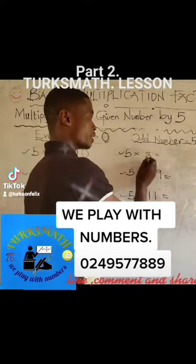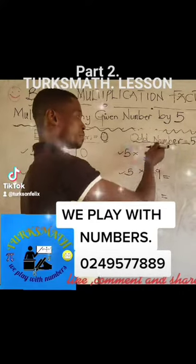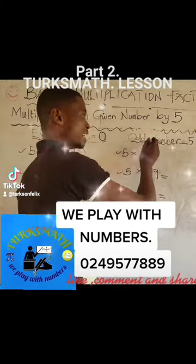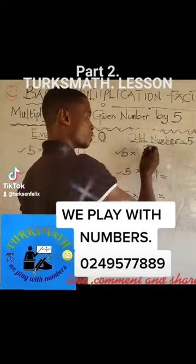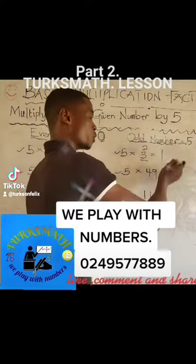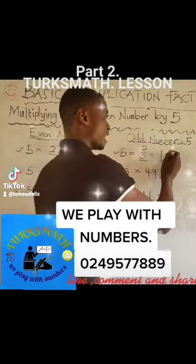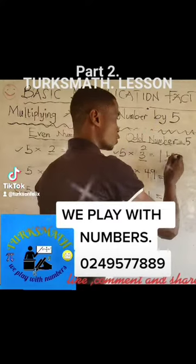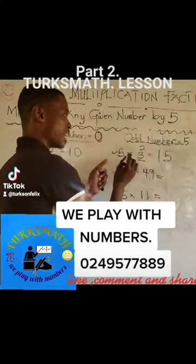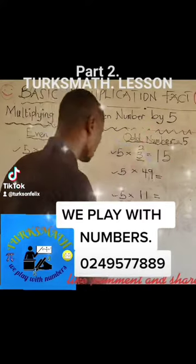5 times 3. What number comes before 3? It's 2. We divide the number into 2 parts. We have 1 — 2 sets is 1. Increase it by 5. So we are going to have 15. So 5 times 3 is 15.